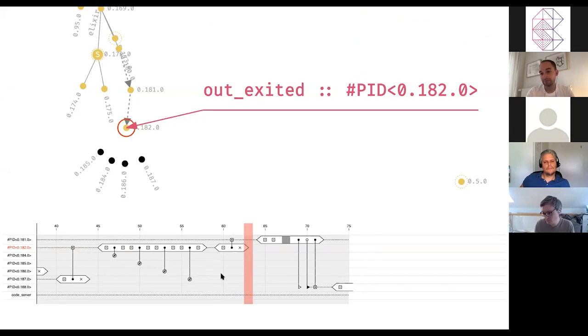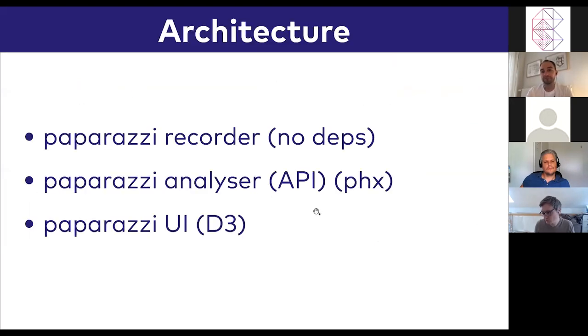Going back to the slides, what is the architecture of this tool? As I mentioned, the first element is Paparazzi Recorder. It has almost no dependency. It's a few lines of Elixir code. Maybe in the future it would be nice to rewrite it in Erlang so that when we are observing the system, even though there is one process around there which works as a tracer and collects information, it doesn't affect the process architecture, doesn't affect the communication, so you can actually see the real thing that is happening in the background.